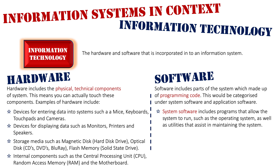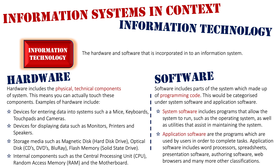The other classification of software is application software. These are the programs used by users to complete their tasks. This includes things such as word processors, spreadsheets, presentation software, authoring software, web browsers, and thousands of other classifications — the things that users use to do their day-to-day work. Information systems are made up of these two categories of software.